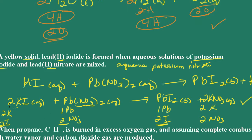Always recheck: 2 potassiums here, 2 potassiums here; 2 iodine atoms, 2 iodine atoms; 1 lead atom, 1 lead atom; 2 nitrates here and 2 nitrates here — remember the coefficient multiplies through. This is balanced.